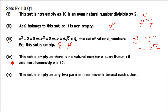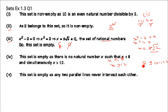Next: x is a natural number, x < 8 and simultaneously x > 12. Is it possible for any number to be below 8 and above 12 at the same time? That is not possible, so this will be an empty set.